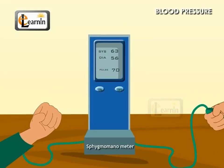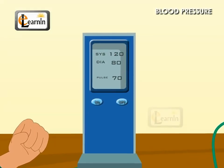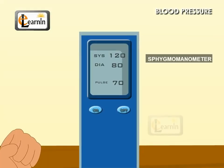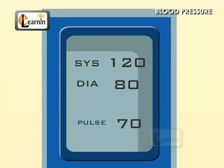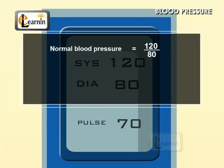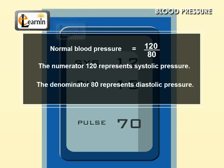Blood pressure is measured by doctors using an instrument called the sphygmomanometer. Blood pressure levels are written in the form of 120/80, which is normal blood pressure. The numerator 120 represents systolic pressure, and the denominator 80 represents diastolic pressure.